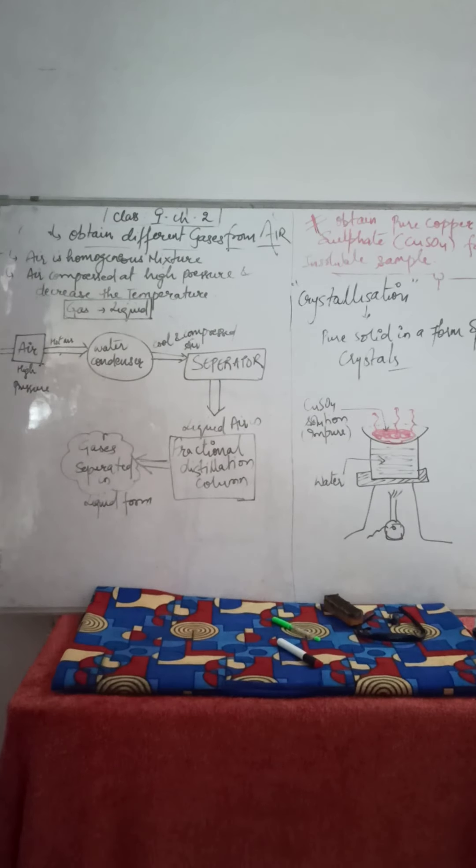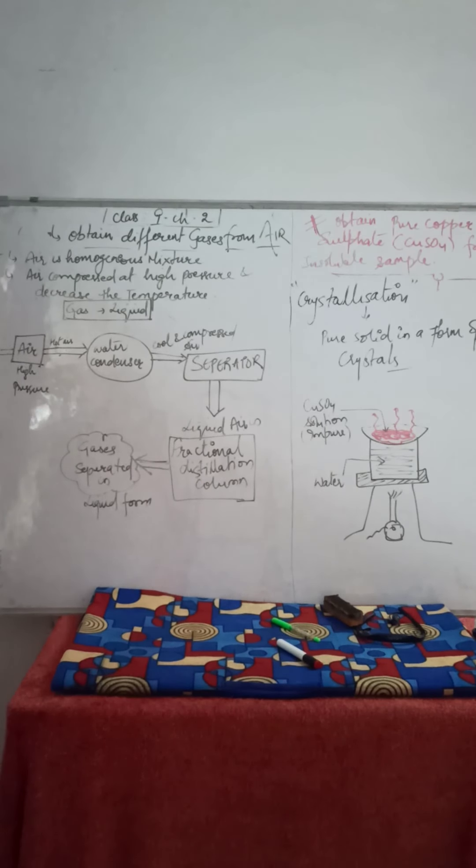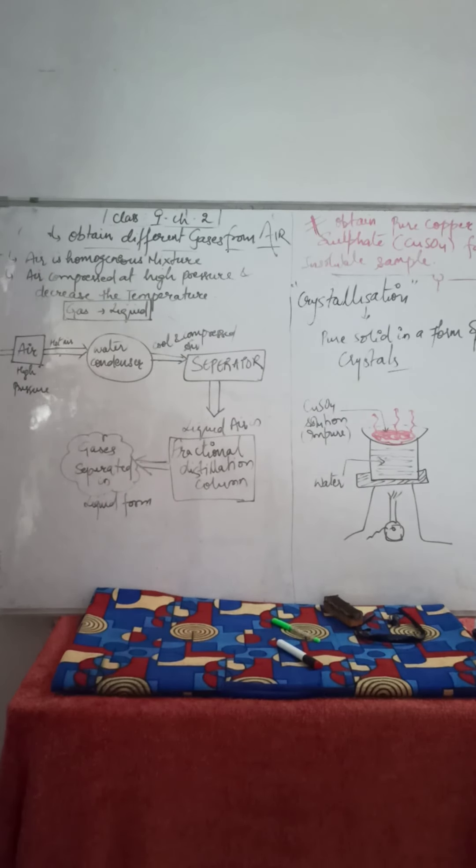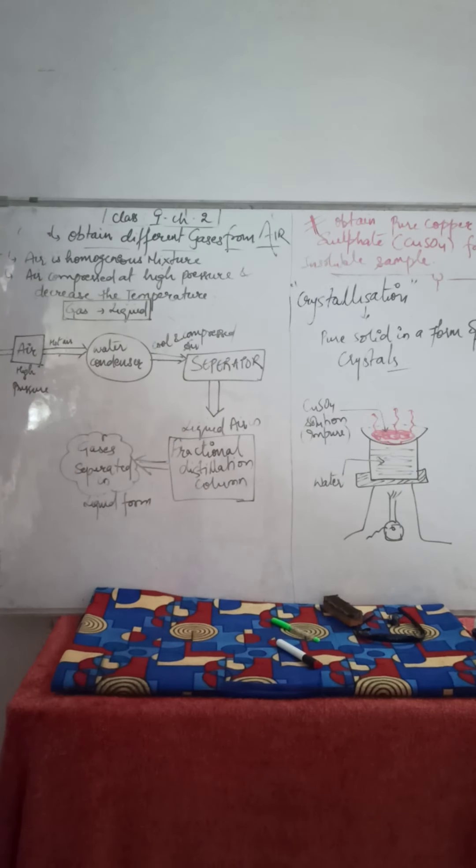This ray diagram is very easy. First, we give high pressure to the air and lower temperature. The air becomes hot and enters the water condenser. The water condenser cools the gas and compresses it. Then it goes to the separator. The air is now completely converted into liquid state because in fractional distillation column, we require liquid state of air. Then we give heat to the mixture, and according to their boiling points, the gases will separate out.